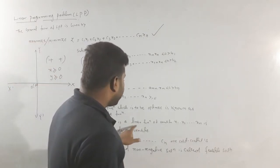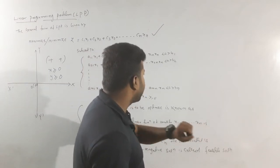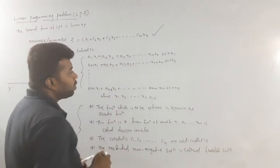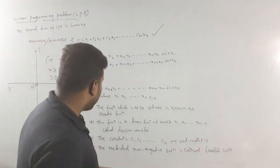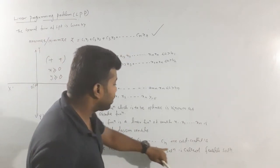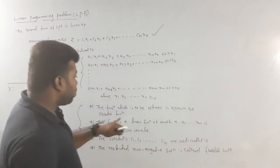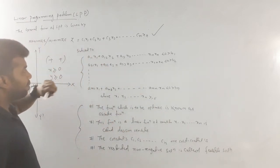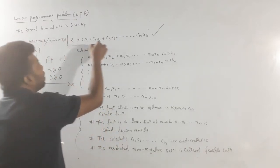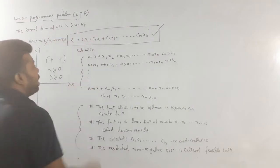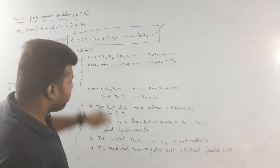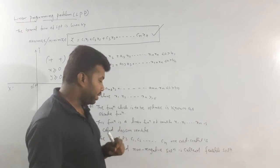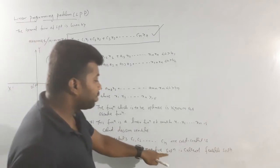The objective function is a linear function. x1, x2, ... xn are called decision variables. c1, c2, c3 are the cost coefficients. The function which is to be optimized — either maximized or minimized — is called the objective function. The restricted non-negative solution is called the feasible solution.